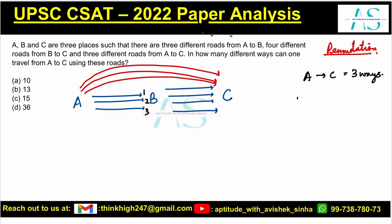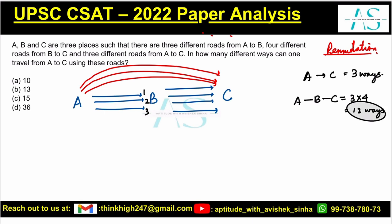So from A to B and then to C, we have three times four ways, which is twelve ways. In total we have twelve plus three, which is fifteen ways of traveling. That is option number C, and that is how you mark these questions. I hope this helps, take care, bye.